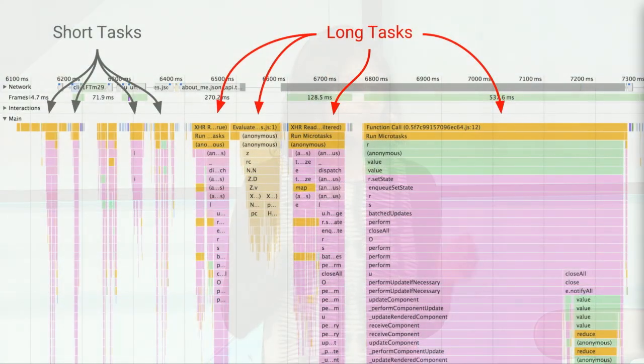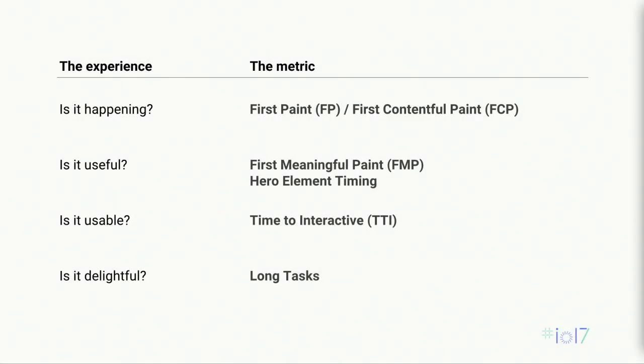You might have heard a lot about 60 FPS and 16 milliseconds. The reason the threshold is 50 milliseconds and not 16 is that animation issues are a small subset of responsiveness issues on the web today. If you know you are animating, then yes, you have to share the 16-millisecond budget with the browser. Long tasks are the cause of most responsiveness issues on the web today, and scripts are by far the most common cause. To recap, this table shows how each metric maps to the user question: is it happening maps to first paint and first contentful paint; is it useful maps to first meaningful paint and hero element timings; is it usable maps to time to interactive; and is it delightful maps to the absence of long tasks.